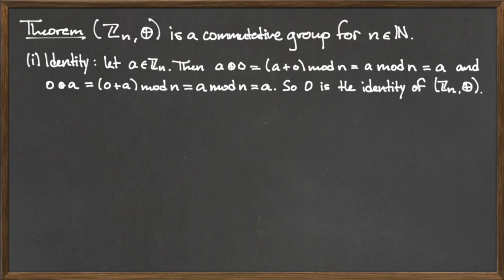Also, 0 ⊕ a equals 0 plus a mod n, which is equal to a mod n, which is equal to a. Thus, 0 is the additive identity in Z mod n.